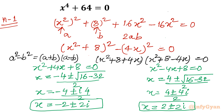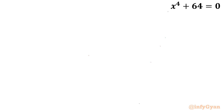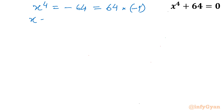Now let's consider the second method using complex numbers. This method is quite easier. If you write 64 on the right-hand side, then consider 64 times −1. Raise both sides to the power 1/4 (fourth root), so x equals the fourth root of 64 times (−1) raised to the power 1/4 — that means we need the fourth root of minus one.